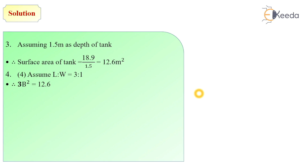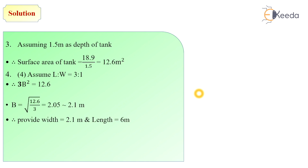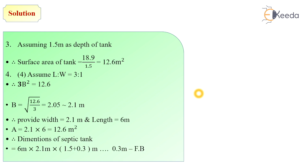Area equals length into width, and since length equals 3w, we get 3b squared equals 12.6. From that equation, width equals 2.1 meters. We provide width equal to 2.1 meters and length equal to 3 times its width, which equals 6 meters. The actual area of the septic tank is 2.1 into 6 equals 12.6 square meters. So the dimensions of the septic tank are 6 m × 2.1 m × 1.5 m, plus a freeboard of 0.3 meters.